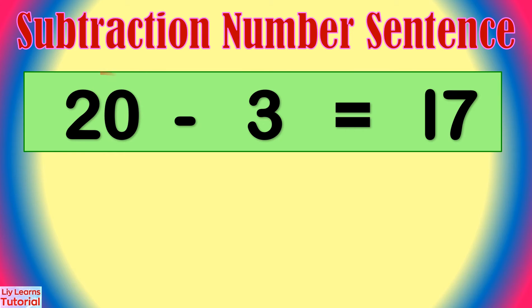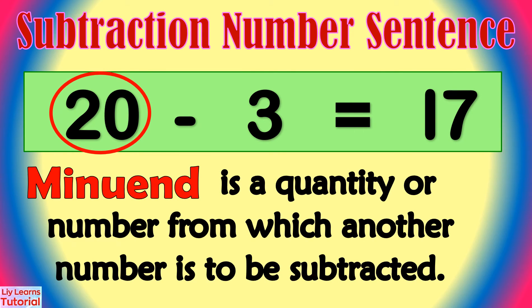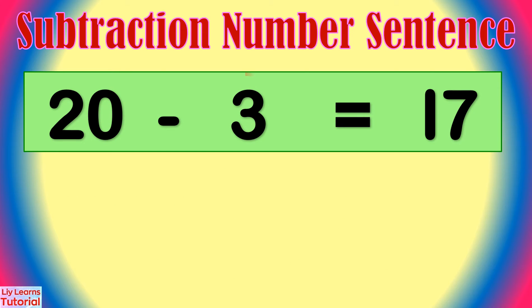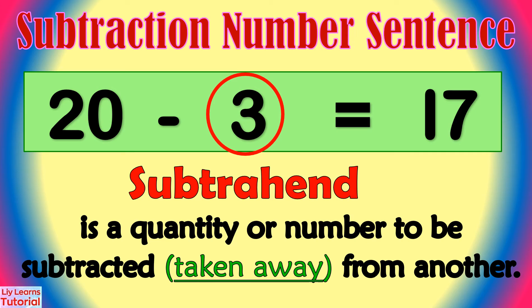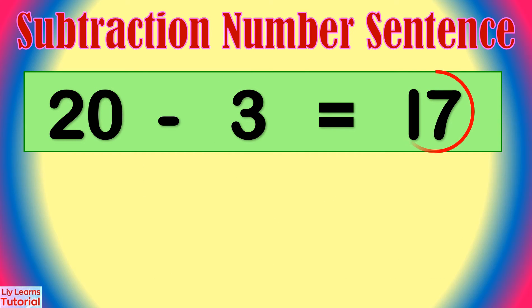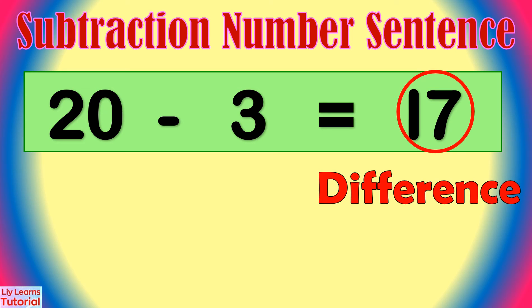This is the minuend. Minuend is a quantity or number from which another number is to be subtracted. Subtrahend is the quantity or number to be subtracted — taken away from another. The answer in subtraction is called difference.